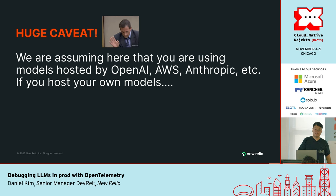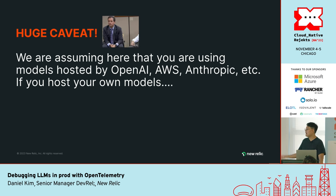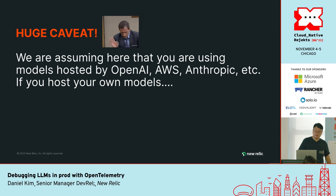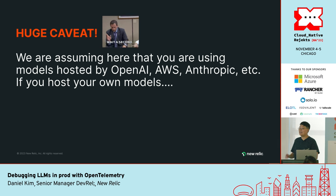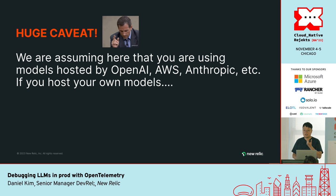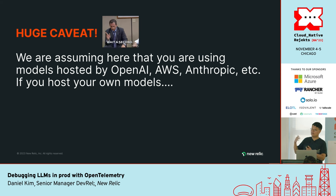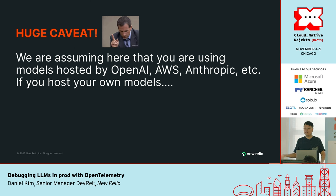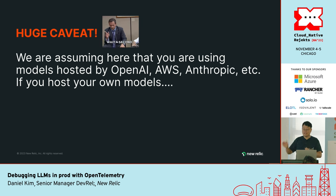Before I get to my closing thoughts, I want to add a huge caveat. We're all assuming here that you're using models hosted by OpenAI, AWS, or Anthropic — these are all managed providers. But if you host your own models, things start to get complicated. You have to now not only manage all the things I talked about in my talk, but also the infrastructure costs, latency, and bottlenecks — like what if you get too many requests to your LLM and you can't handle them and have to scale? It just turns into a whole other infrastructure problem.